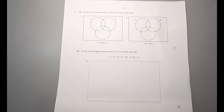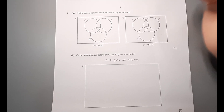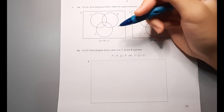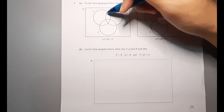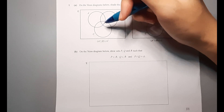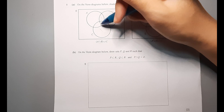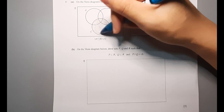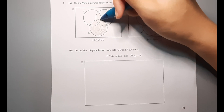Question 1a: On the Venn diagram below, shade the region indicated — (A intersect B) union C. This means the part where A and B overlap, which is this part here, and everything of C is included. So you have to shade all of C plus the part where A overlaps B.